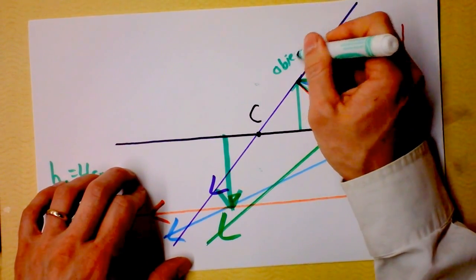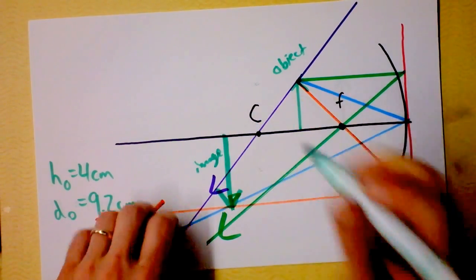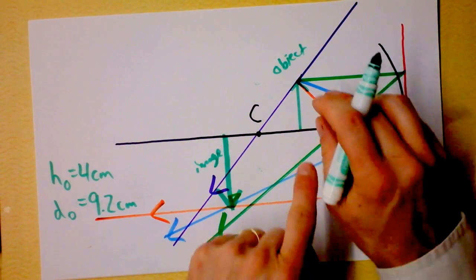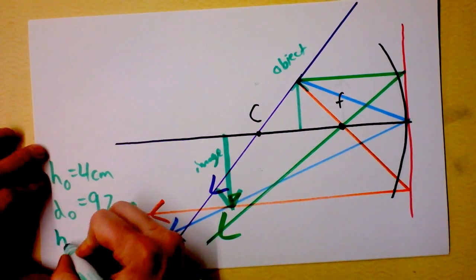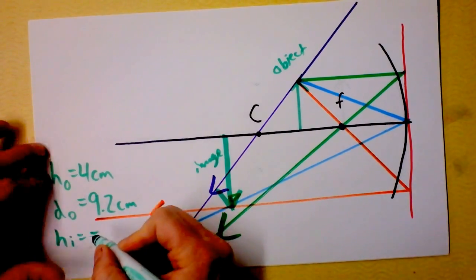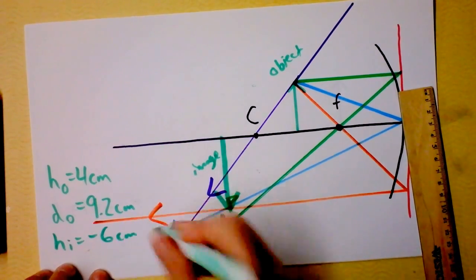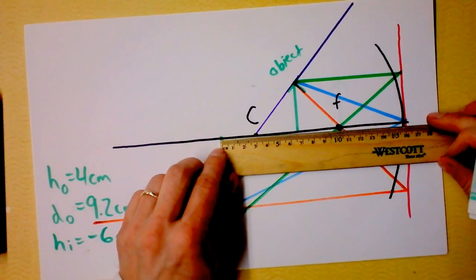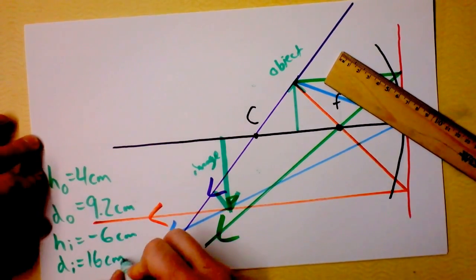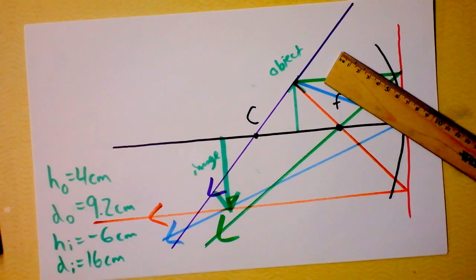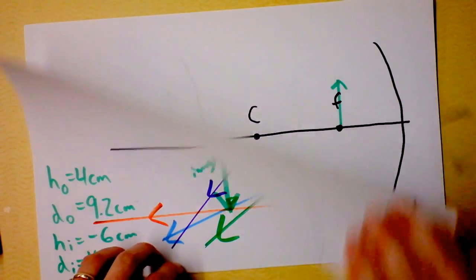We've got an object here and an image here. Notice the image is still inverted — upside down — but it's bigger than the object now. So if you're in between C and F, the image is inverted. The height of the image is negative 6 centimeters, and the distance of the image is 16 centimeters. It looks like we're doing a 50% increase — these ratios all kind of make sense.